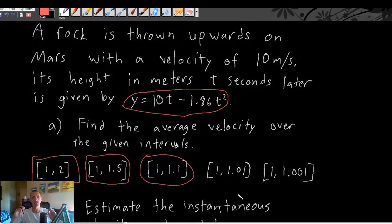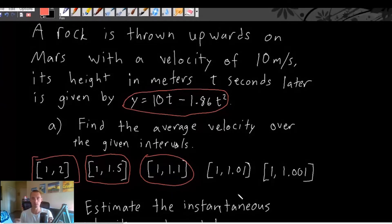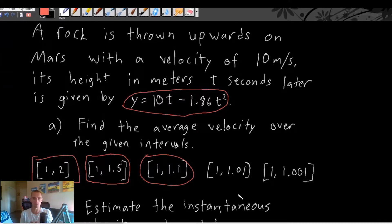There's always gonna be two time data points that you wanna consider, the beginning and end of this time interval, and you're trying to average out the speed or the velocity that your object is traveling throughout that time period.